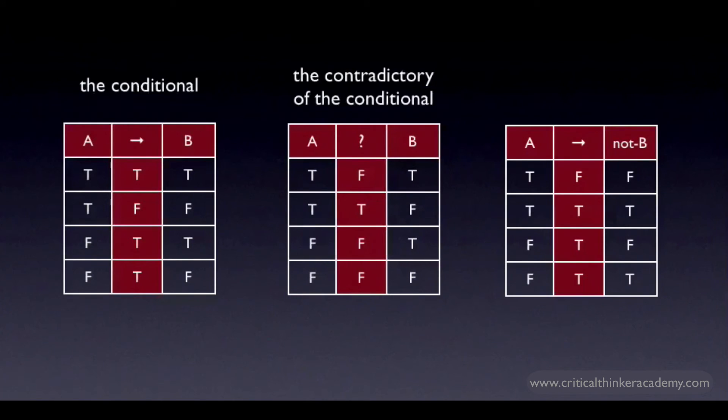We can see right away that a truth table formed by simply negating the consequent won't do. Here's the truth table for the conditional where the only change is negating the consequent. As you can see, I've switched the truth values in the B column and I've evaluated the truth value of the conditional in the middle column according to the rule that the conditional as a whole is true except when A is true and B is false. You can see that the truth values for this new conditional don't match up with the truth values for the contradictory of the conditional.